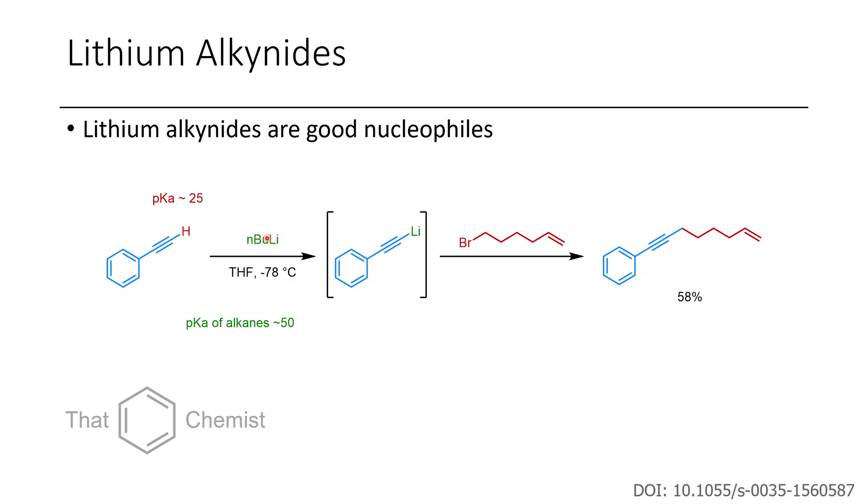The reason N-butyllithium works to deprotonate this is because it's 25 orders of magnitude difference in acidity, which, even though they are both CHs, is a hell of a big difference. This is easy for N-butyllithium to deprotonate. The difference between this alkane CH, which would be the pKa of butane, versus the pKa of this acetylene, is the difference between the acidity of this acetylene and sulfuric acid, which is pretty big.